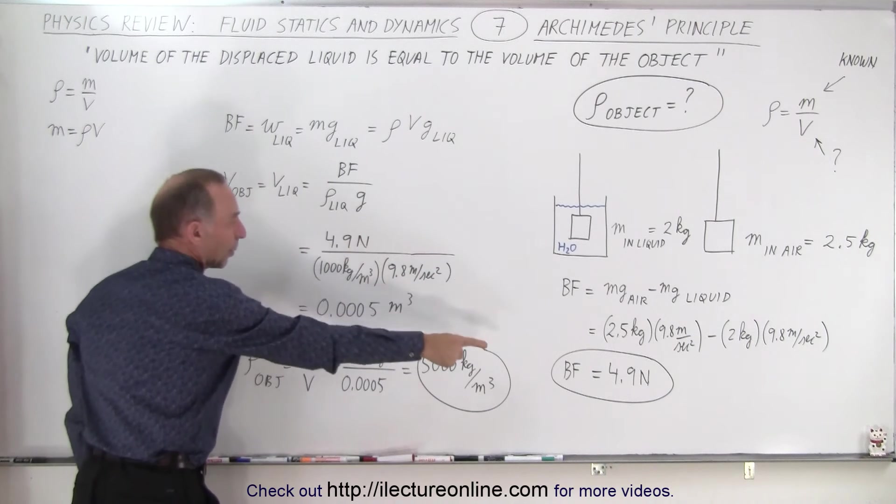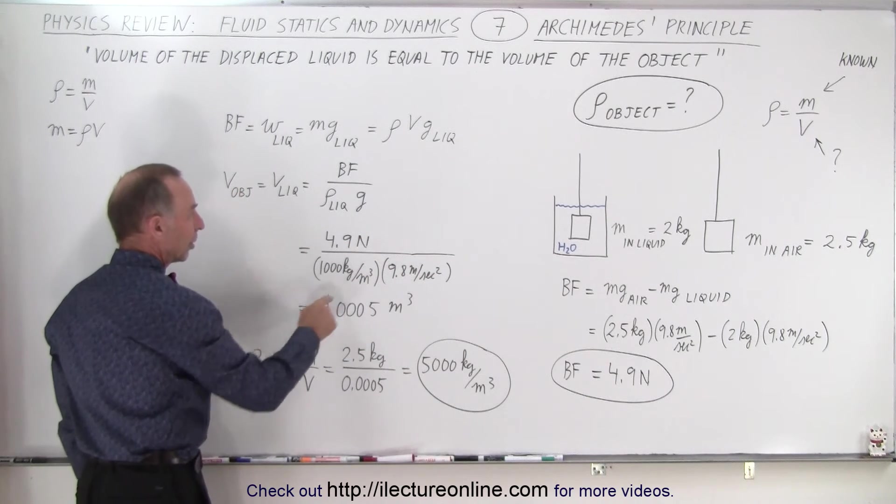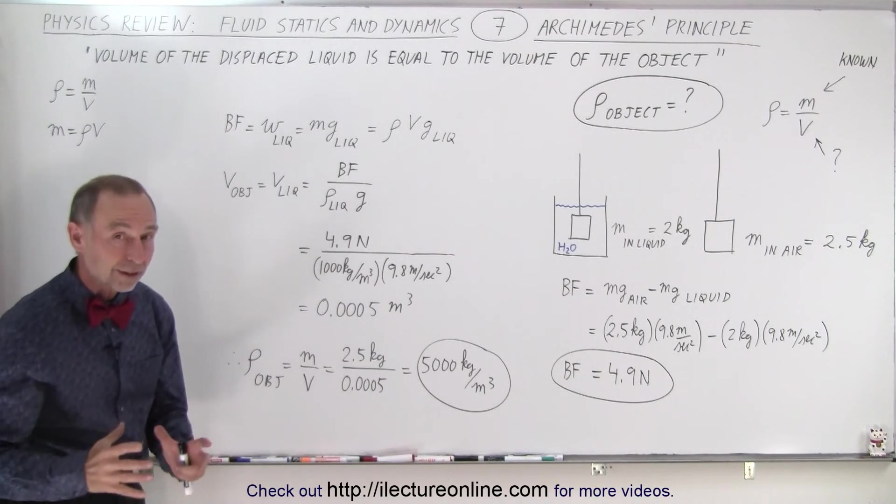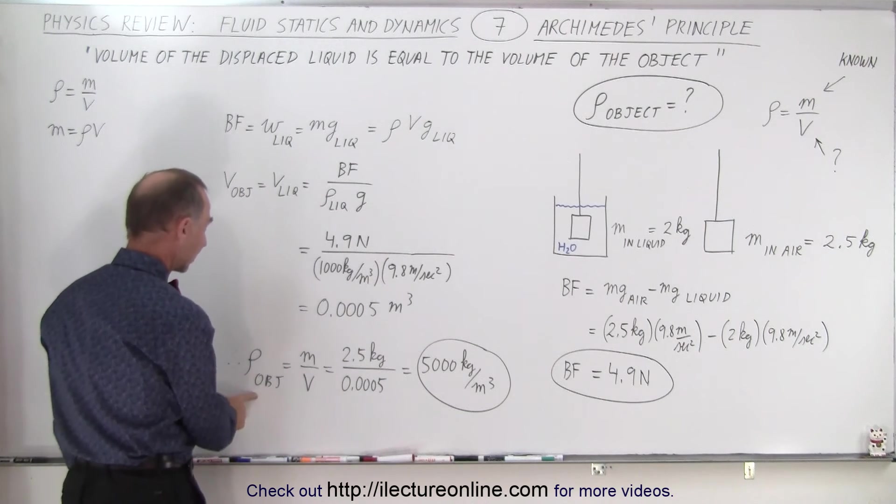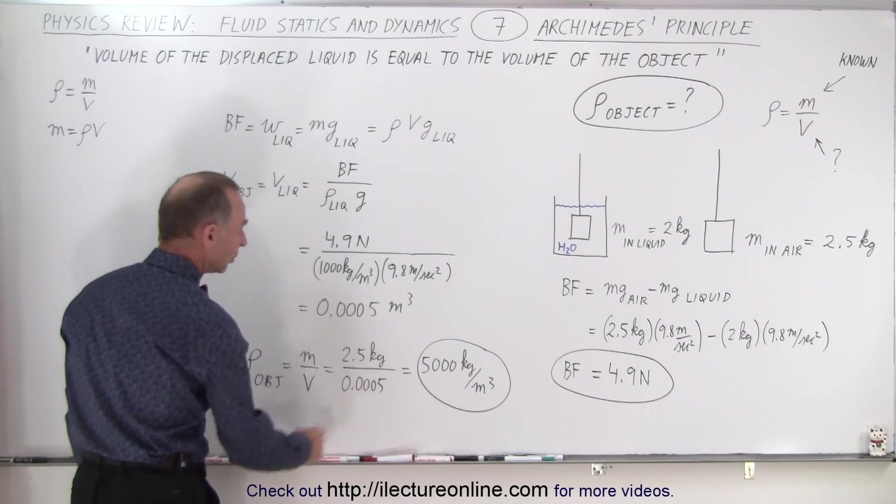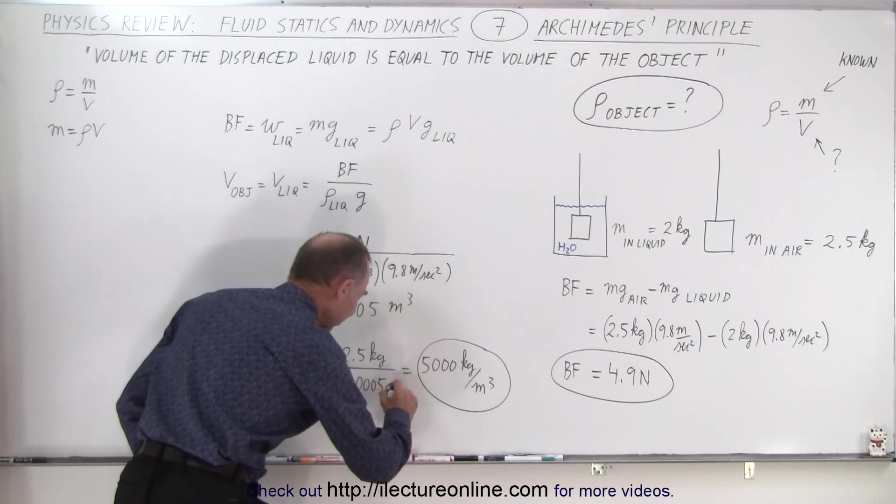We plug in the buoyancy force that we determined. We have the density of the liquid, g, and we get the volume of the displaced liquid, which is the volume of the object. Now we can calculate the density of the object by taking its mass divided by the volume, which is now known. This, of course, is cubic meters.